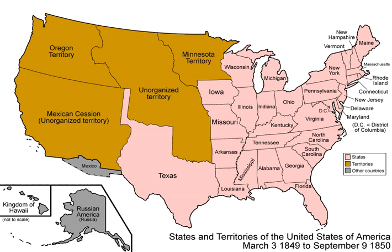During the deadlock of four years, the second-party system broke up, Mormon pioneers settled Utah, the California Gold Rush settled Northern California, and New Mexico under a federal military government turned back Texas's attempt to assert control over territory Texas claimed as far west as the Rio Grande. The eventual compromise preserved the Union but only for another decade.